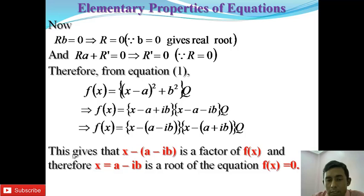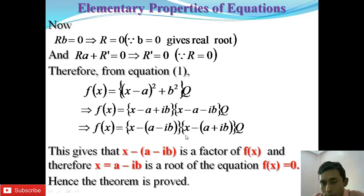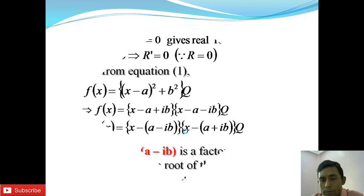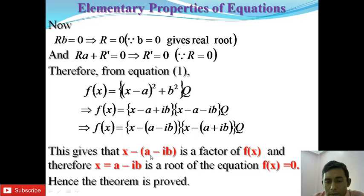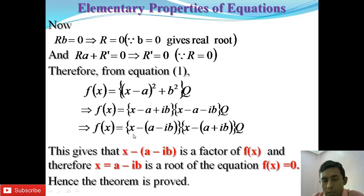Since f(x) = (x - (a - ib))(x - (a + ib))·q, both factors are divisors of f(x). This gives that x - (a - ib) is a factor of f(x), and by the factor theorem, x = a - ib is a root of the equation f(x) = 0. This proves the theorem.